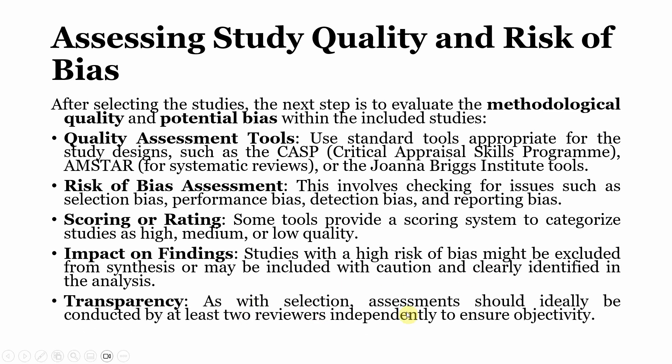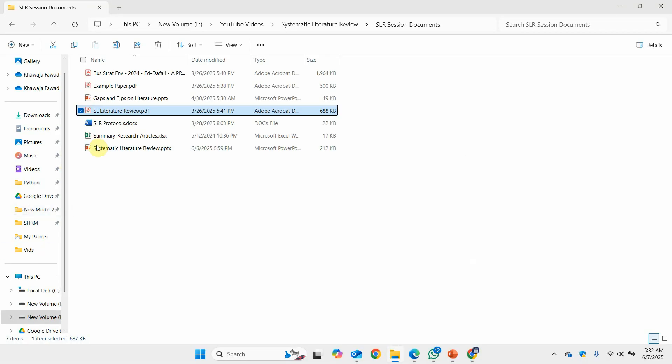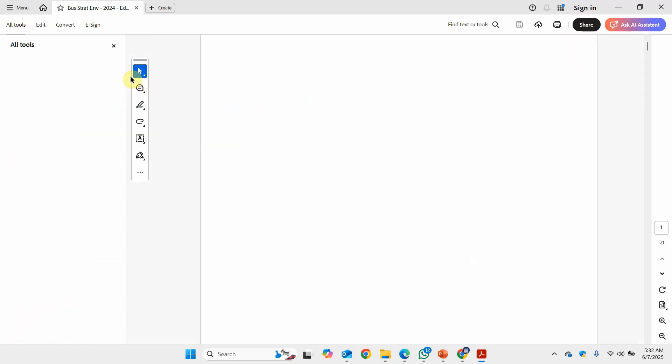Transparency: quality assessment should ideally be conducted by at least two reviewers. If you cannot have two reviewers, you can get your methodology checked and reviewed by some experts. Now let's look at a few examples of inclusion and exclusion from some published studies.